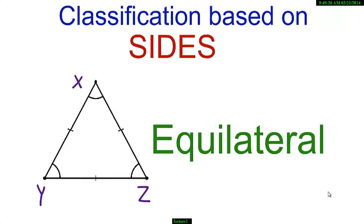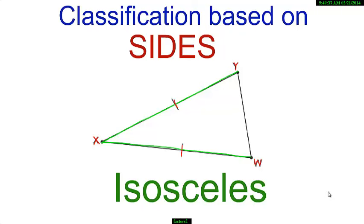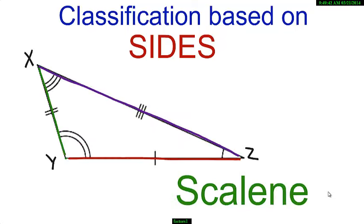Triangles are classified based on their sides as equilateral if all three sides of the triangle are equal, or isosceles if any two sides are equal, scalene if all the sides are unequal.